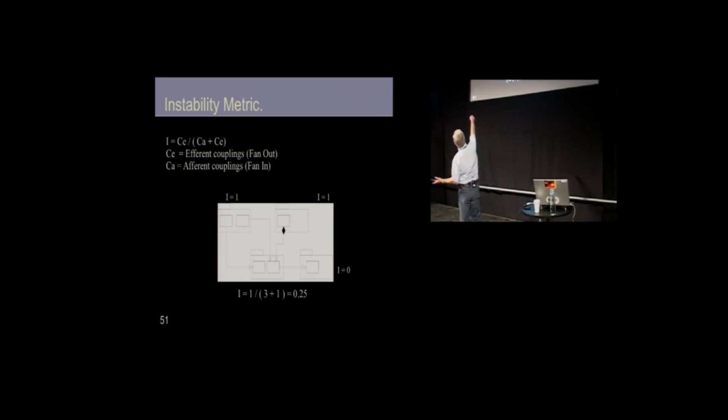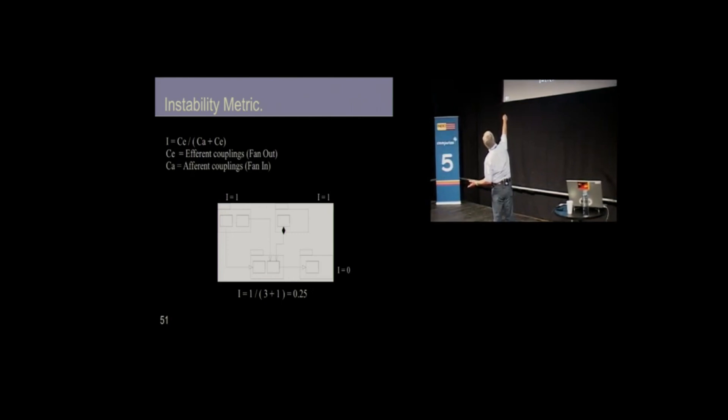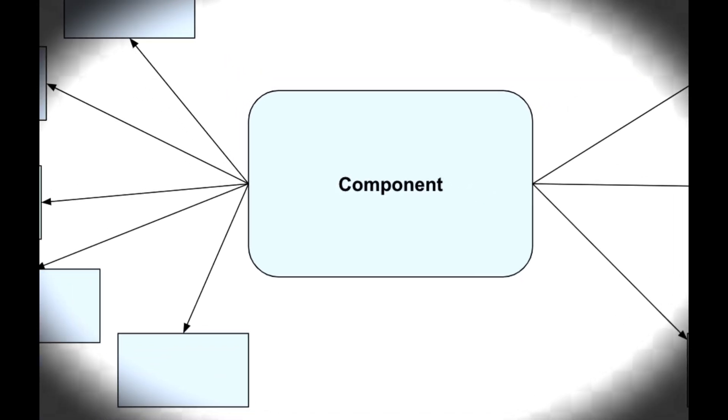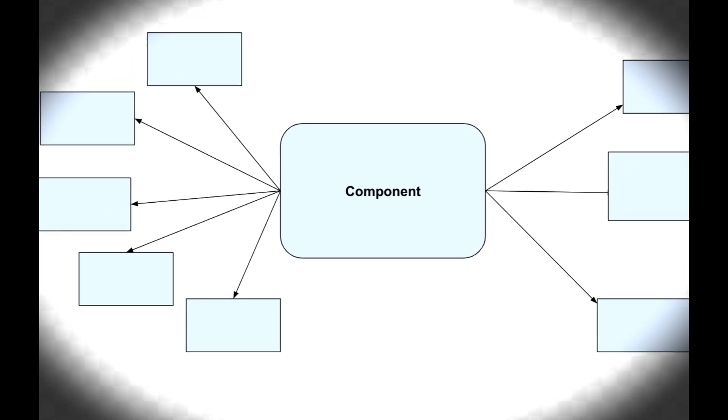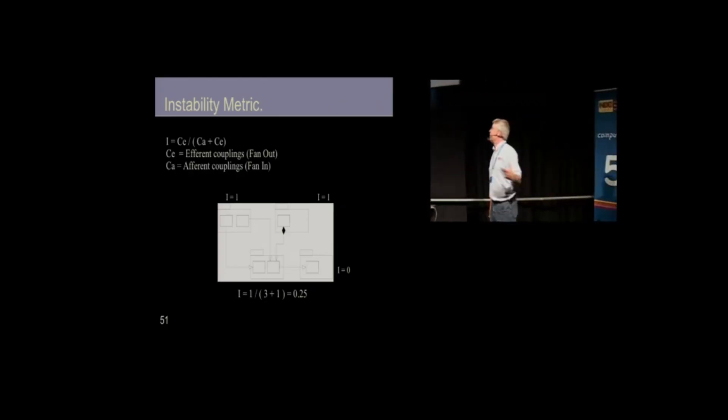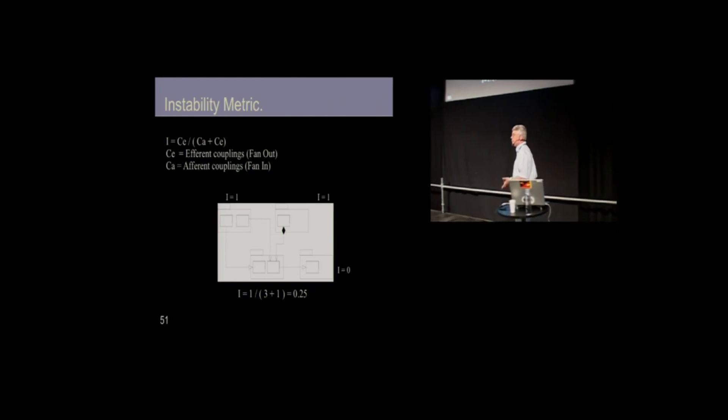What if I is one? Then CA is zero. There are no incoming dependencies, but there are outgoing dependencies. That is the teenager. So an I of one is a teenager. It's unstable, instable. An I of zero is an adult. It is stable.